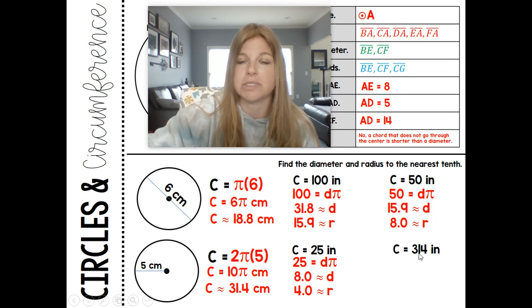And the last one. If my circumference is 314, then 314 is equal to d times pi. Divide both sides by pi, I get 100, and then my radius is 50.